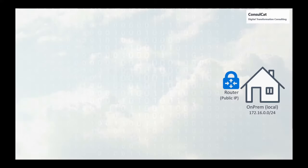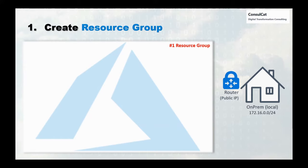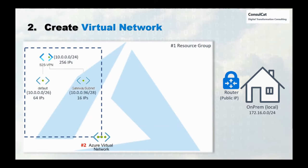So without further ado let's begin. The first thing we need in step one is to create a resource group, in which we will create a virtual network in step two. The Azure virtual network in my case has a 10/24 address space, which is good for 256 IP addresses, and you see the small /28 subnet on the right. This is going to be the gateway from Microsoft Azure to the on-prem environment.